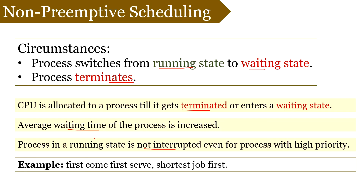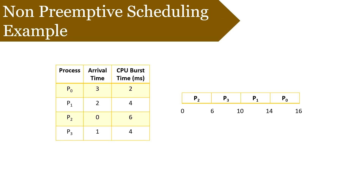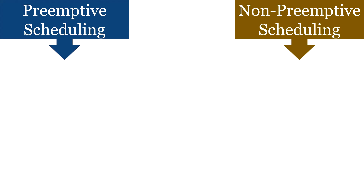Let us discuss non-primitive scheduling with an example of first come first serve. We have four processes: P0, P1, P2, and P3. Process P2 arrives at the ready queue at time zero, so CPU is allocated to P2, and it will take six milliseconds to execute completely. During this duration, all other processes — P0, P1, and P3 — arrive at the ready queue. Since this is non-primitive scheduling, P2 is not interrupted. Once P2 completes, CPU is allocated to P3, then P1, then P0 based on first come first serve.